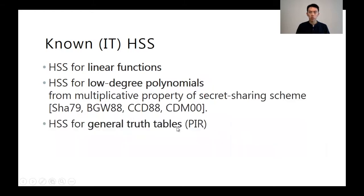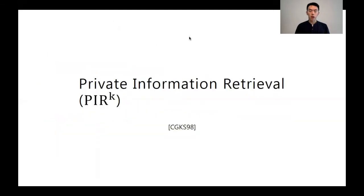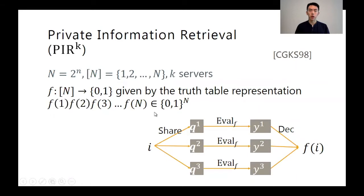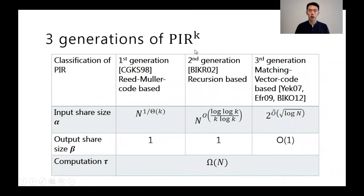HSS for general truth tables is known as private information retrieval, or PIR. PIR is the setting where a client holds an input to a truth table and wishes to retrieve a single bit. Using capital N to denote the size of the truth table, which is 2 to the little n, there are roughly three generations of PIR protocols. The first generation encodes the truth table in a manner similar to a Reed-Muller code, achieving share size n to the 1 over k for k servers. The second generation is based on recursion and is slightly better, but the input share size is still exponential for a constant number of servers. The third generation protocols are based on matching vectors and hugely improve this situation, with share size now sub-exponential for two or three servers.